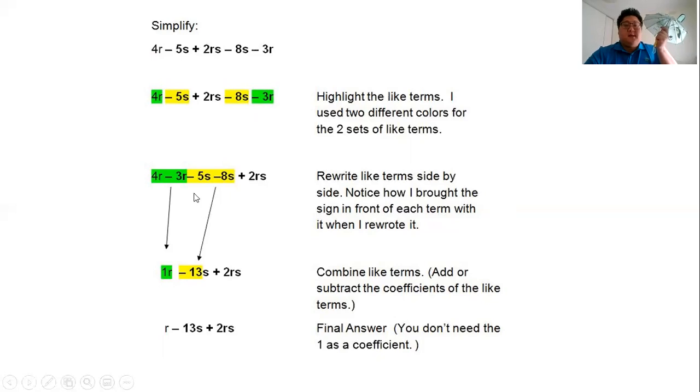Next, we're going to rewrite them together: 4r take away 3r, and then minus 5s minus 8s. Plus 2rs we'll just leave it there. Then we evaluate. 4r take away 3r, well r stays there and 4 take away 3 gives us 1r. Then minus 5 minus 8, we're going backwards, so if we're on the number line at minus 5 and we go back 8 spaces, we get minus 13s. Plus 2rs we're not adding or subtracting anything from that.